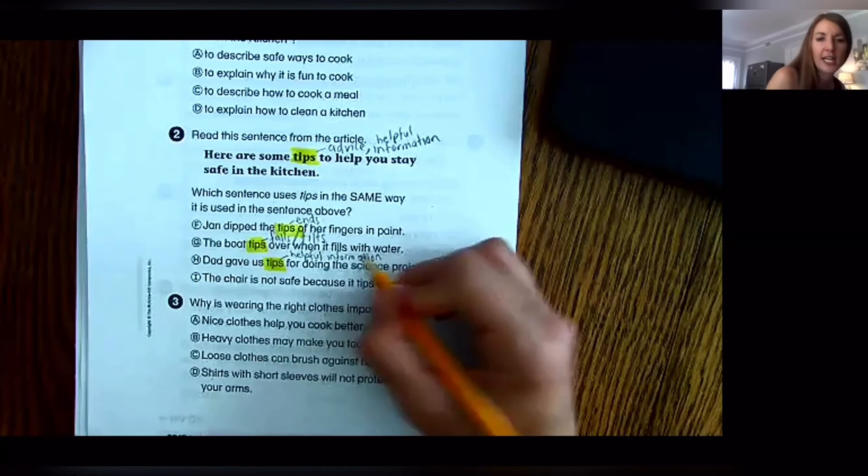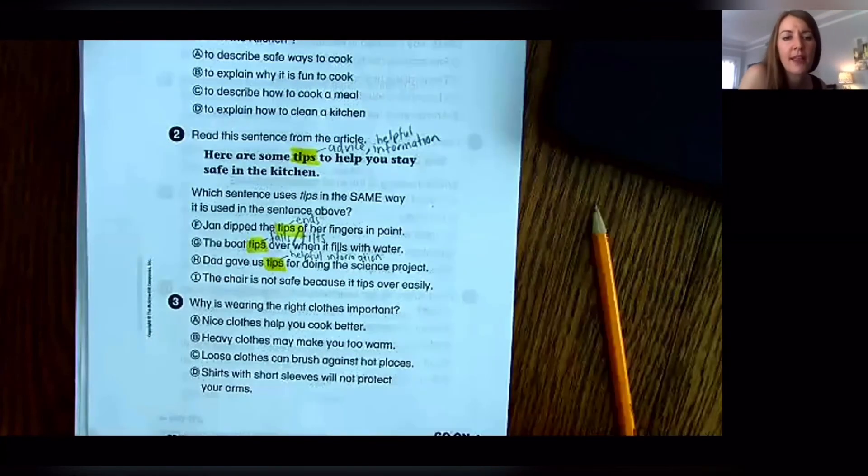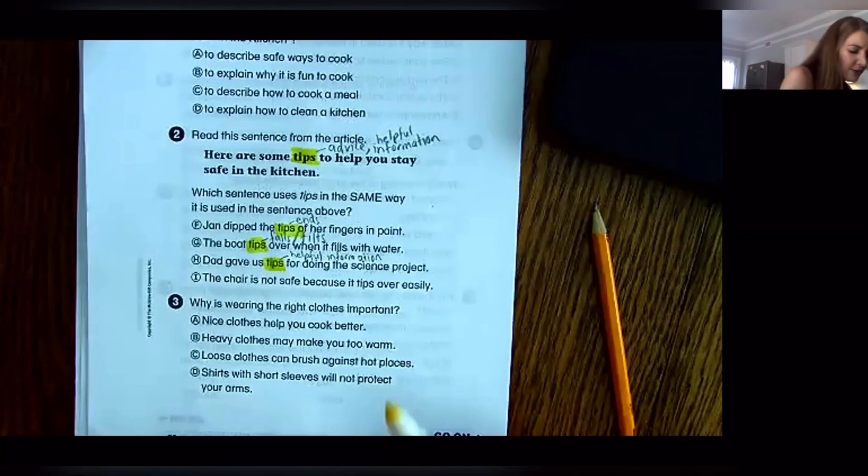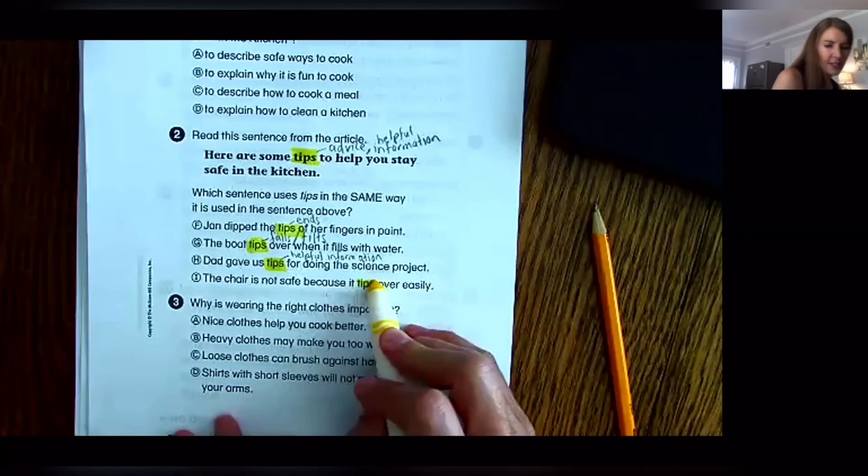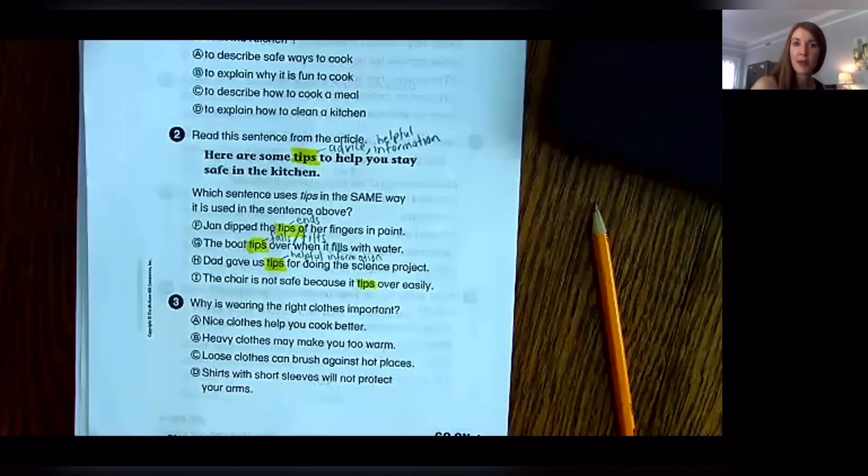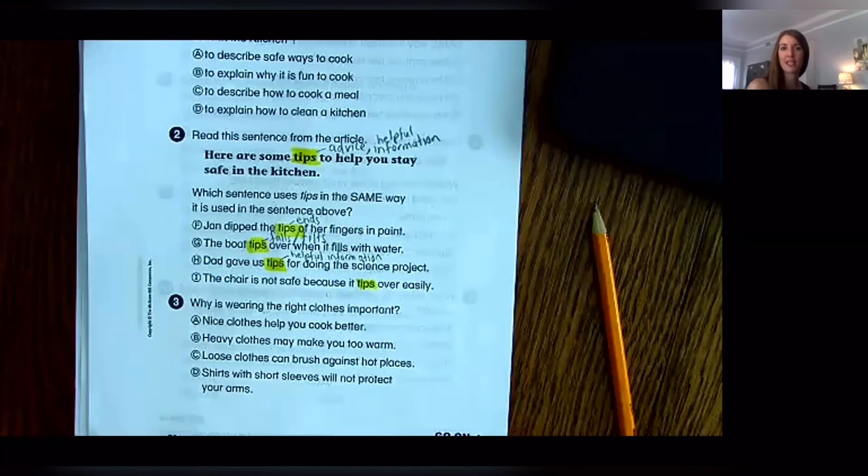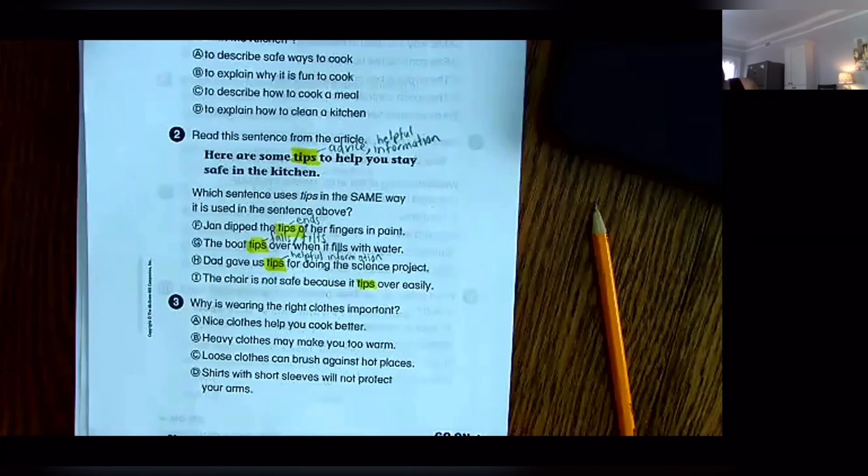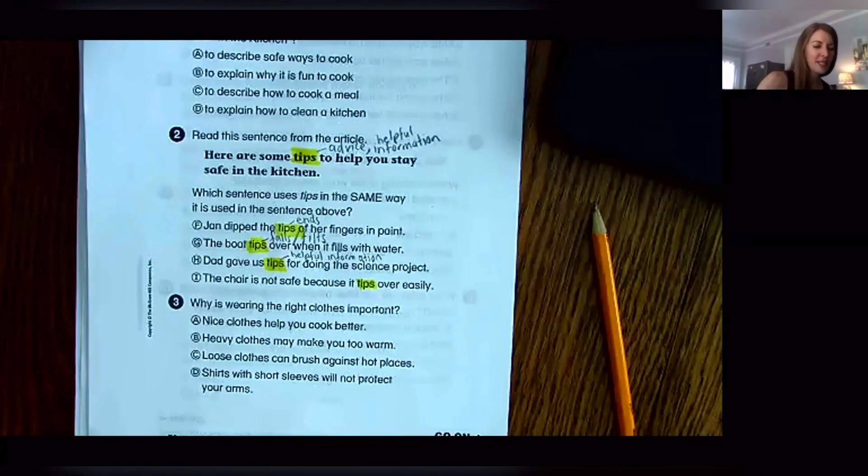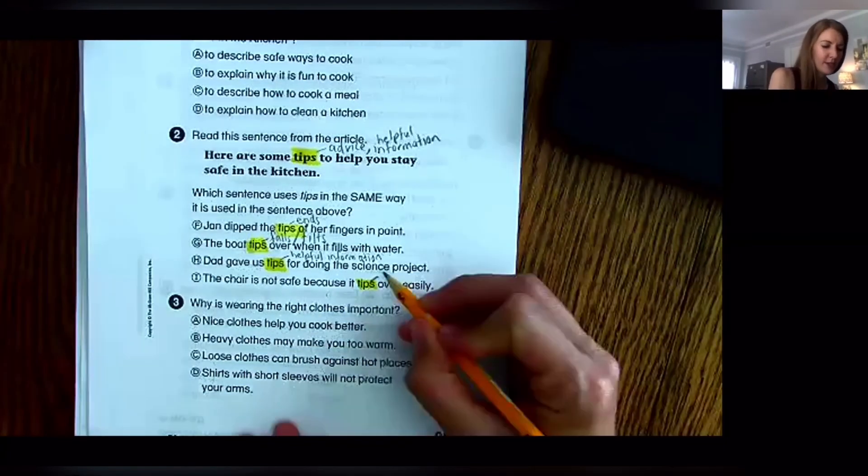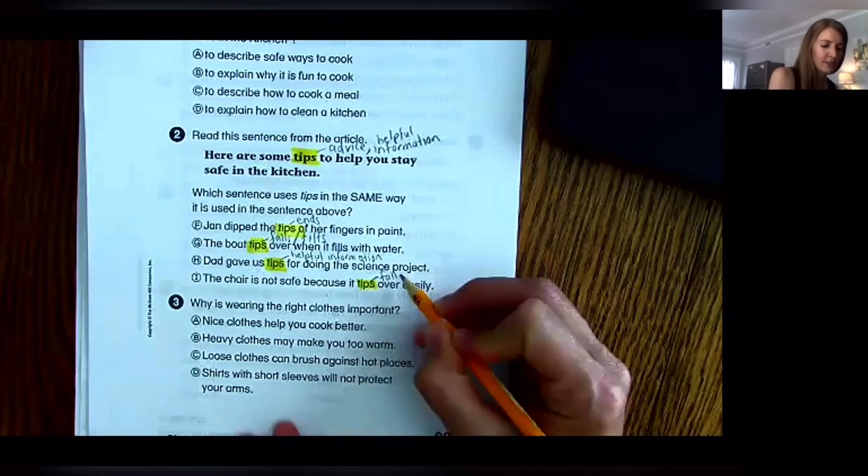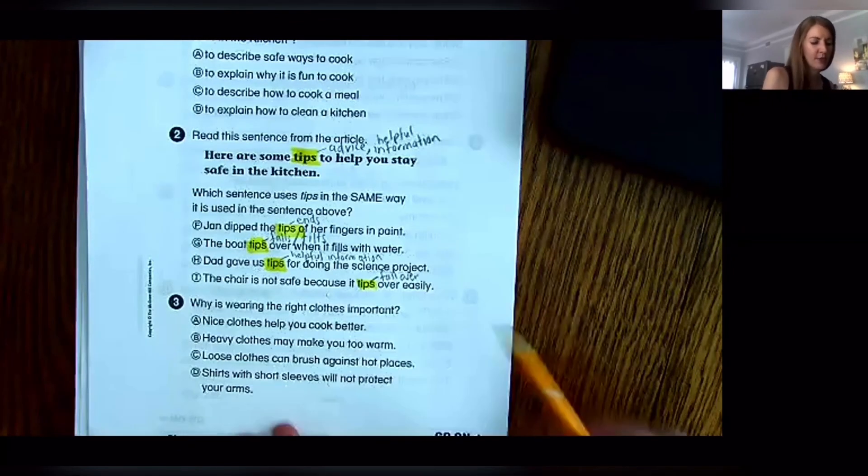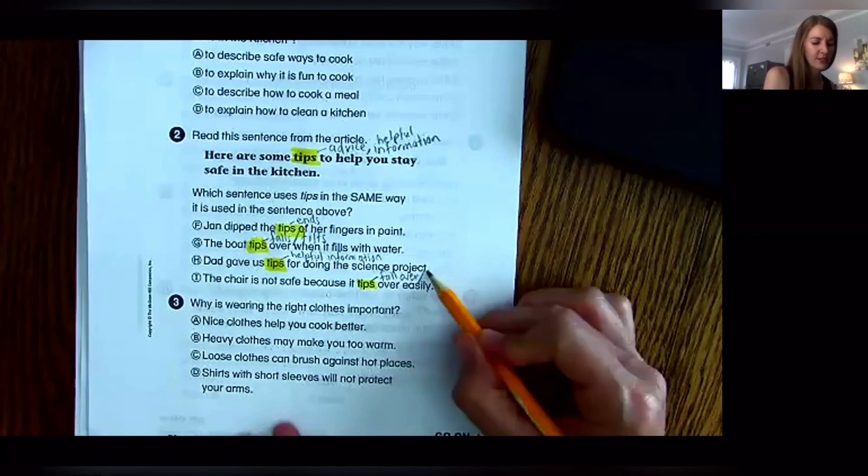But I am going to double check on I just to make sure. I: The chair is not safe because it tips over easily. So I know from just from happening in the classroom sometimes, kids will be goofing around on chairs and they tip over, which means they're falling over. So that type of tip would mean to fall over or to tilt, just like the boat tips, falls over or tilts over.